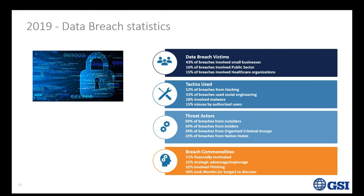A lot of this comes from the Verizon report. Data breach incidents involve small businesses at a higher number than the public sector and healthcare sector. The reason is small businesses don't necessarily have all the skills to protect every piece of information or asset they have. Hackers go for multiple smaller attacks because what's a small business going to do? It's hard to get law enforcement involved. 52% of tactics involve hacking, 33% social engineering, 28% malware, and 15% misuse.